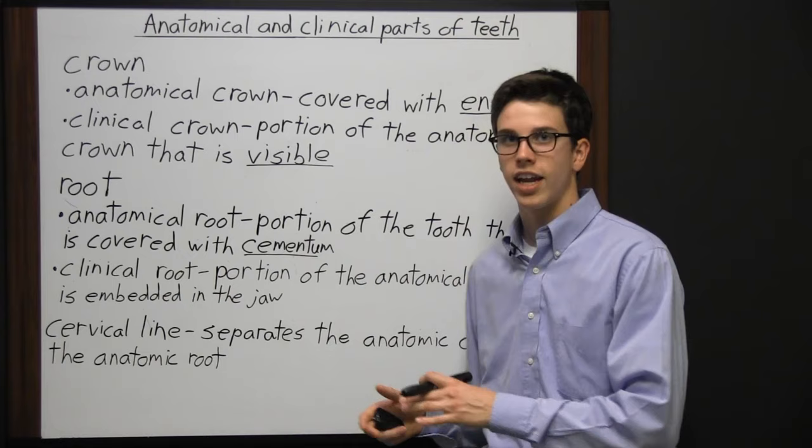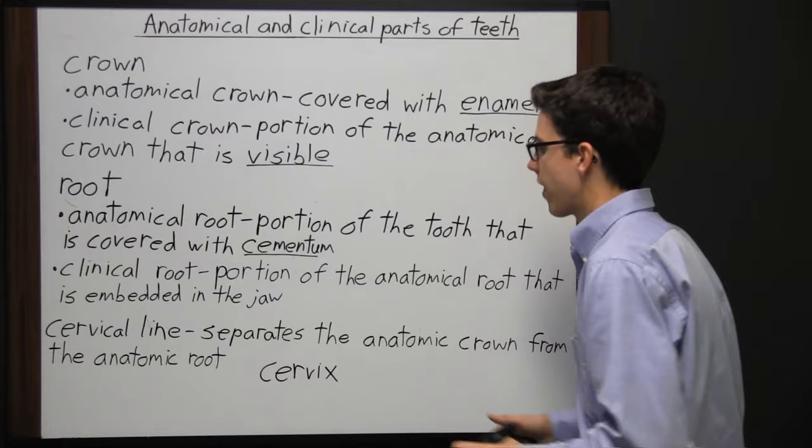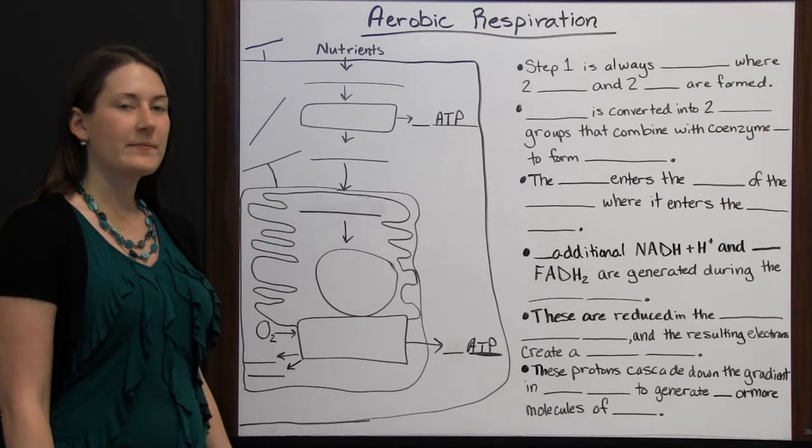Another name for the cervical line is the cemento-enamel junction (CEJ), because it's where the cementum and enamel join together. This area is also called the cervix of the tooth, spelled C-E-R-V-I-X.